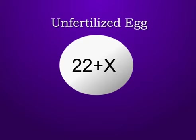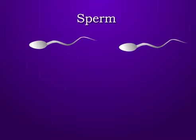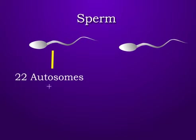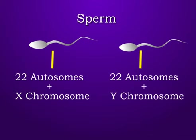Let us see the arrangement of chromosomes in an unfertilized egg. An unfertilized egg has 22 autosomes and one X chromosome. Whereas sperms have two types of arrangements. One type has 22 autosomes and one X chromosome. Another type has 22 autosomes and one Y chromosome.